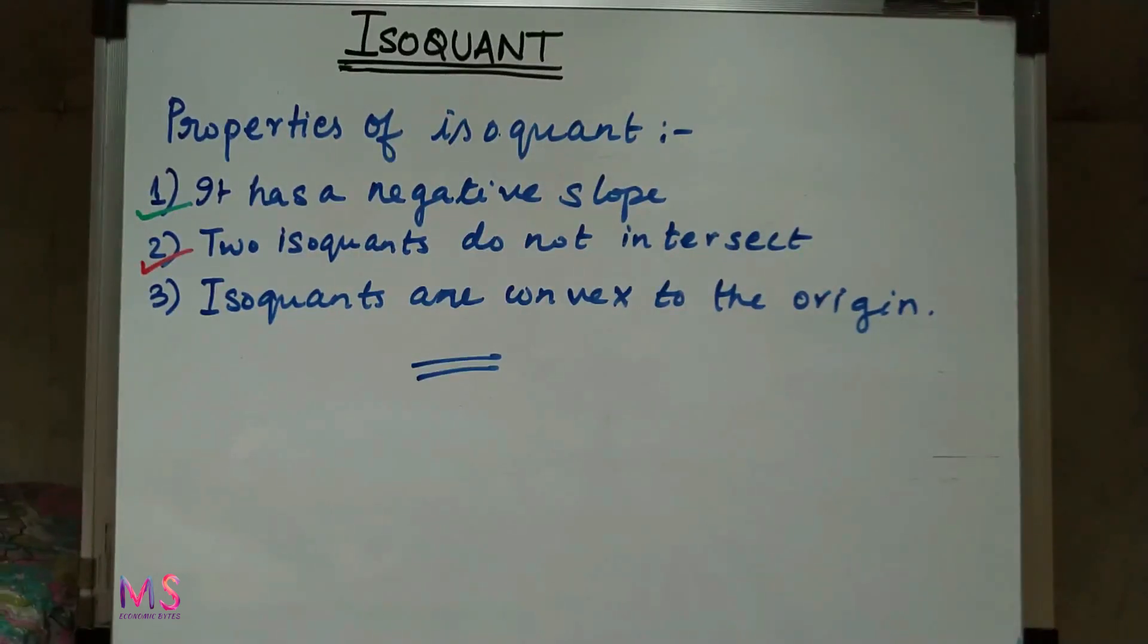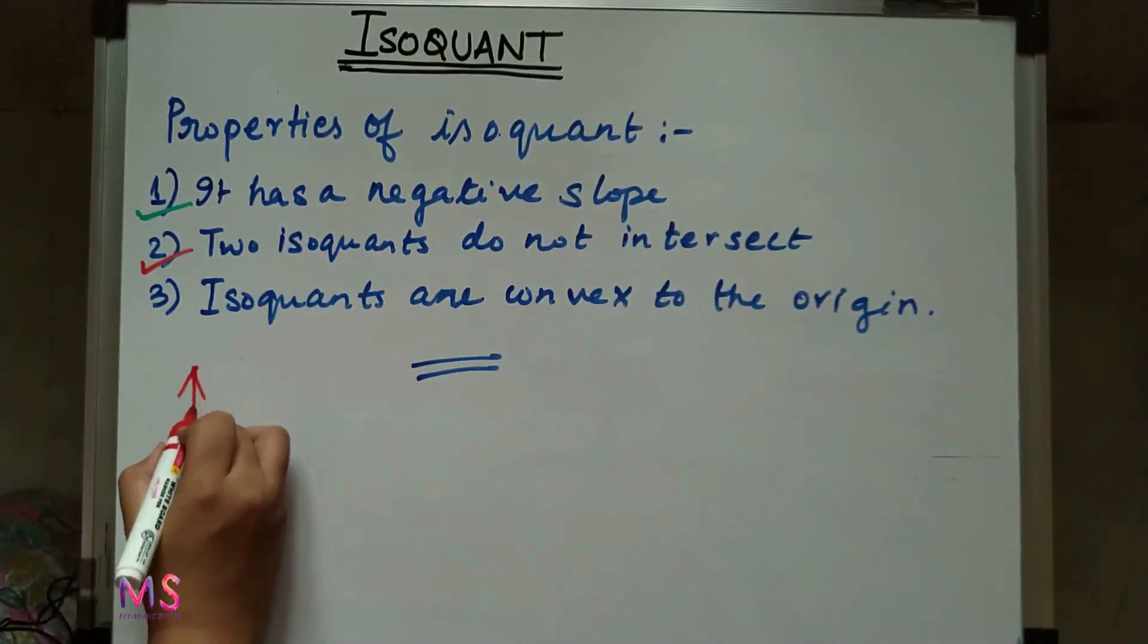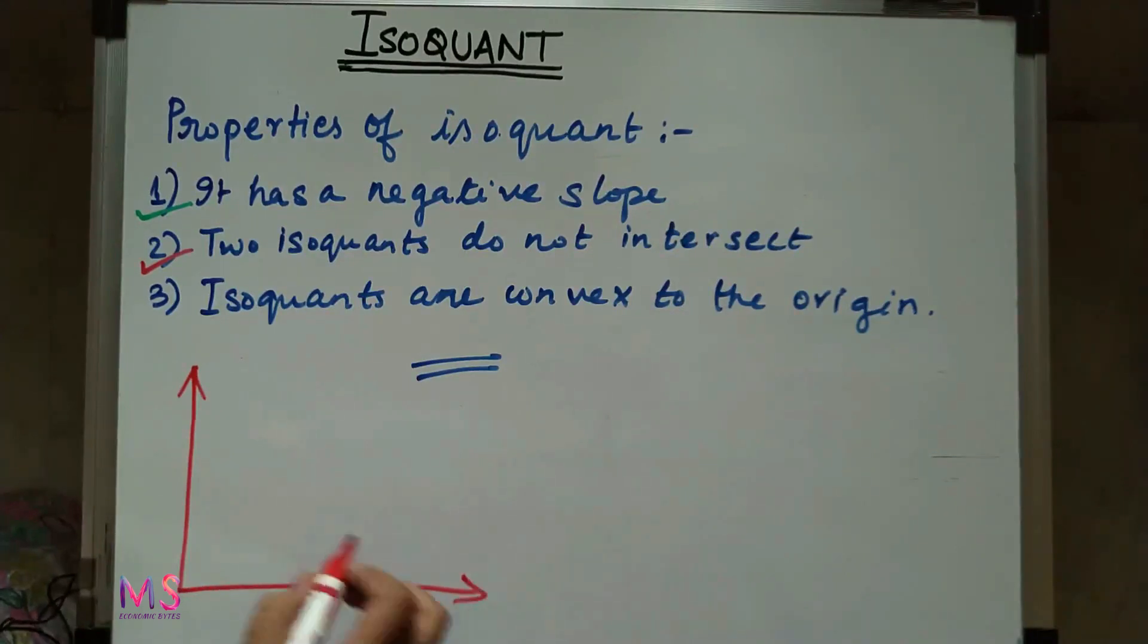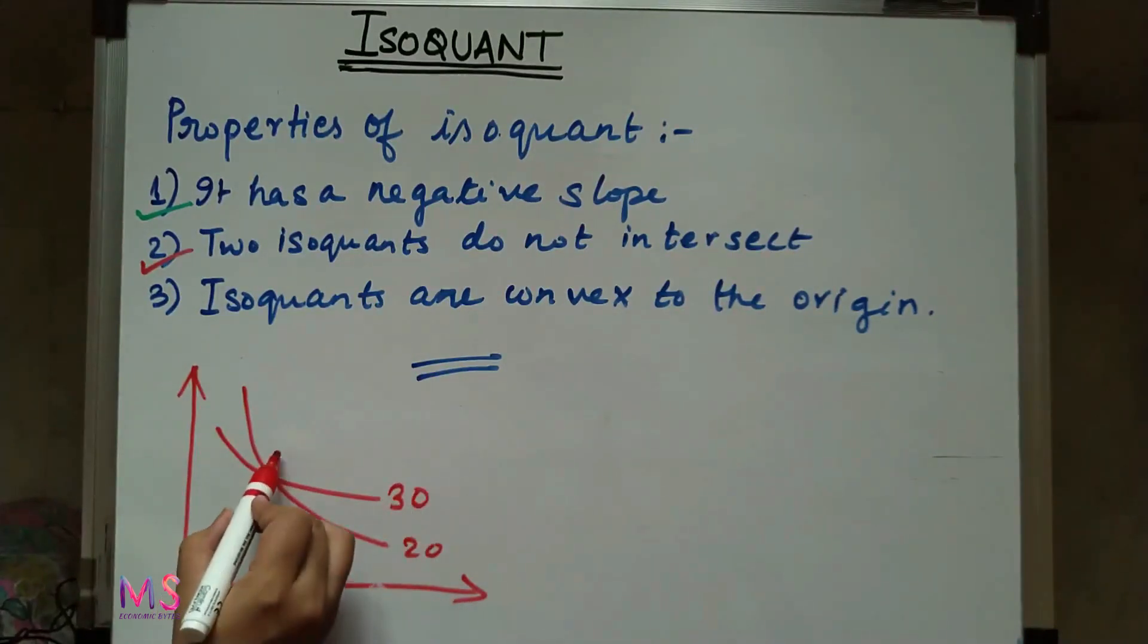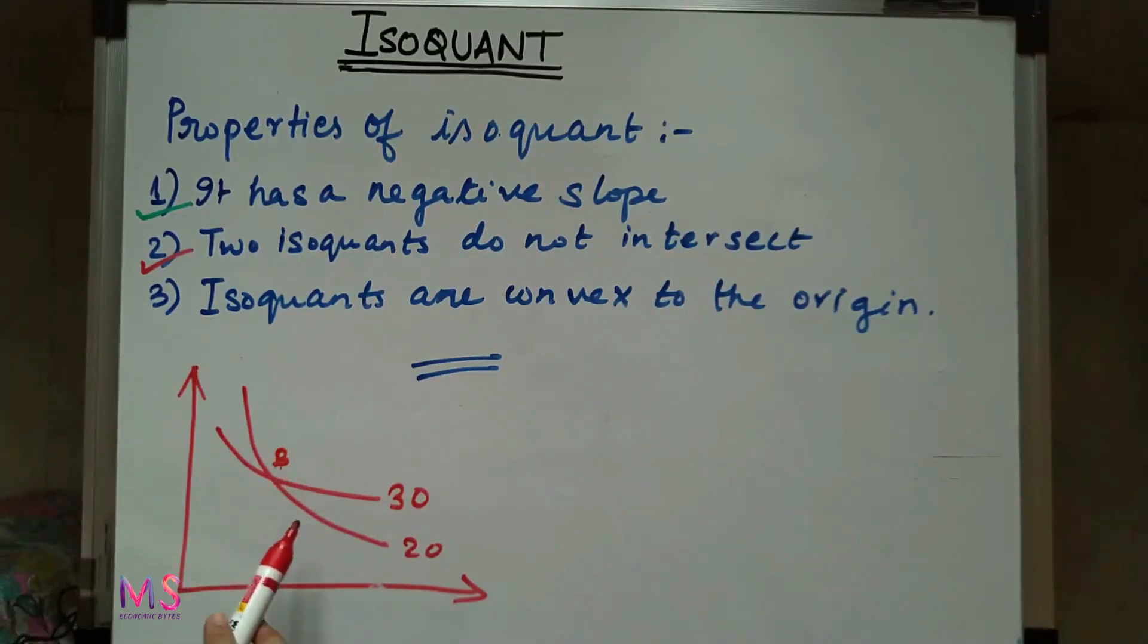Now our second property of isoquant is that two isoquants do not intersect each other. Suppose we have two isoquants: this particular isoquant produces 20 units of output and this one produces 30 units of output. Let this be point B. We have already discussed that each isoquant produces a specified level of output, but here at point B it is showing that it produces both 20 and 30 units of output, which is absurd, hence proving that two isoquants cannot intersect each other.